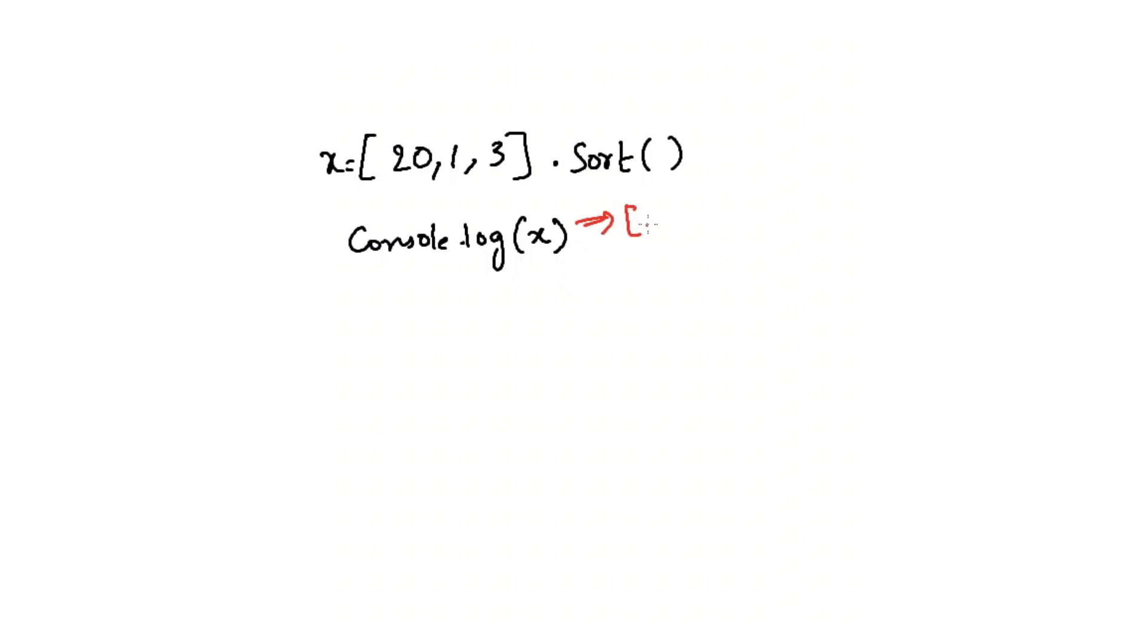And you will think that the output will be 1, 3, 20. But no, the output will be 1, 20, 3. This is because here we are using the sort method.